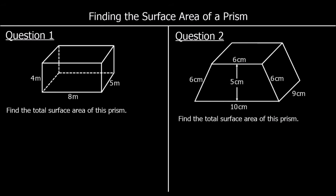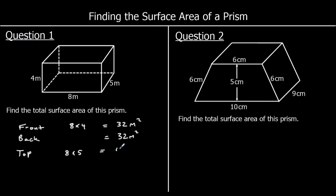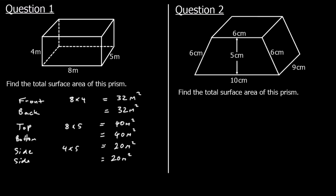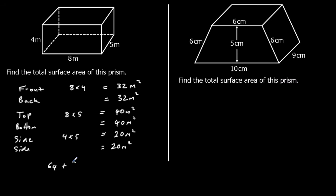Question 1 — find the total surface area. The front and the back are identical, both 8 times 4, which is 32m squared. The top and the bottom are identical — both 8 times 5, which is 40m squared. And the sides are both 4 times 5, which is 20m squared. Adding all together: 64 plus 80 plus 40 gives 184m squared.